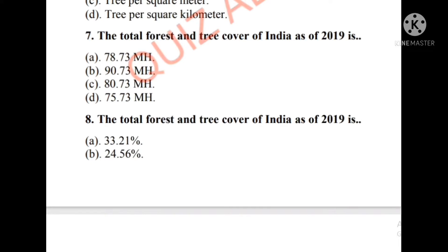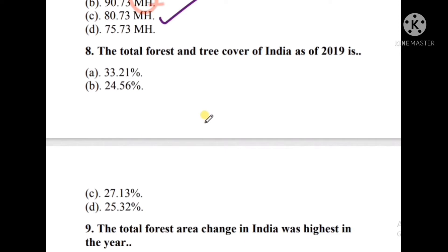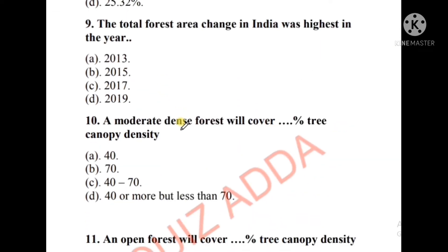Question number seven: The total forest area of India as of 2019 — the right answer is option C, that is 80.73 Mha. Question number eight: The total forest and tree cover of India as of 2019 — the options are 33.21%, 24.56%, 27.13%, or 25.32%. The right answer is option B, that is 24.56%. Question number nine: The total forest area change in India was highest in the year — the options are 2013, 2015, 2017, or 2019. The correct answer is option D, that is 2019.